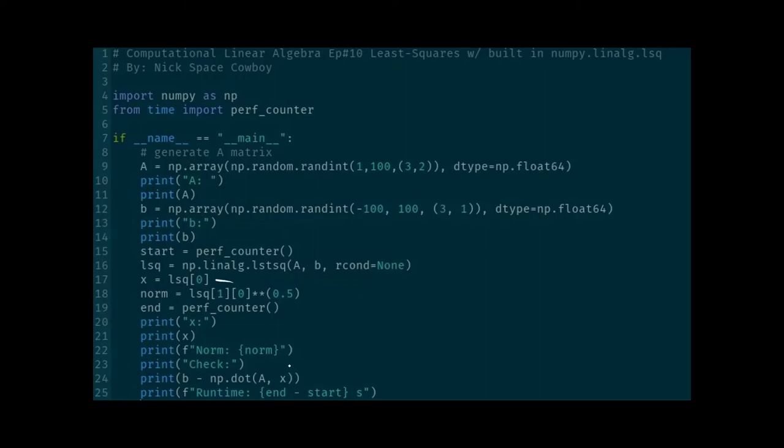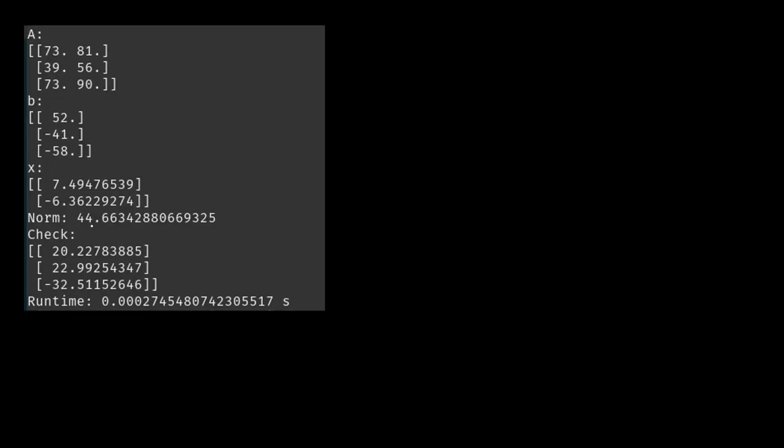We have our least squares solution. The norm that is output is not square rooted, so we need to square root that. Otherwise, it's just the sum of all the squares, pretty much. And then we're outputting all the same stuff. On our first run, you can see that we have a norm of 44, so this isn't a particularly terrible least squares solution or approximation, but you can see we are definitely not representing our B vector all too terribly well.